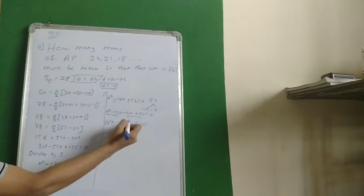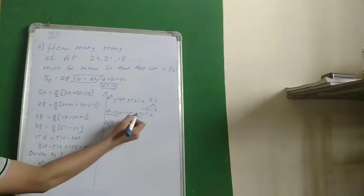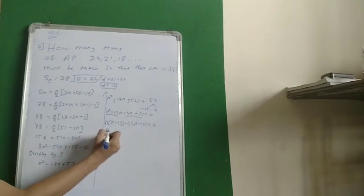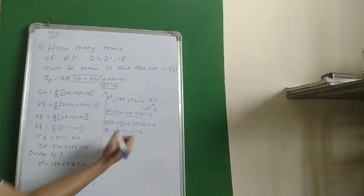Here it is 4N, so 4 is taken as common. As signs are changed, here it is minus sign, is equal to 0. N minus 13 and N minus 4 is equal to 0.